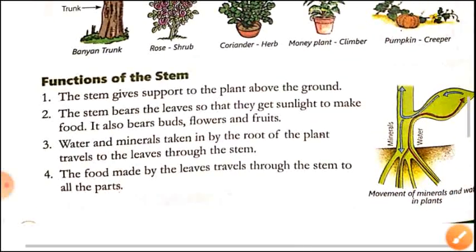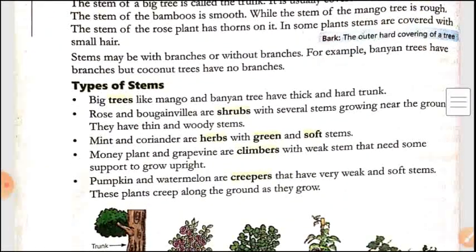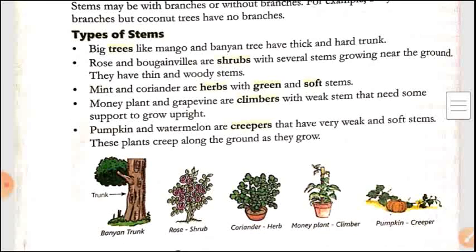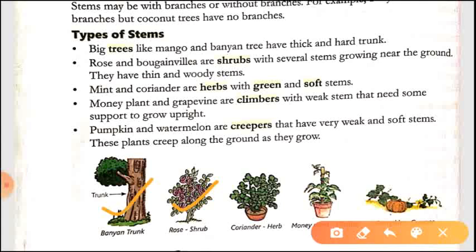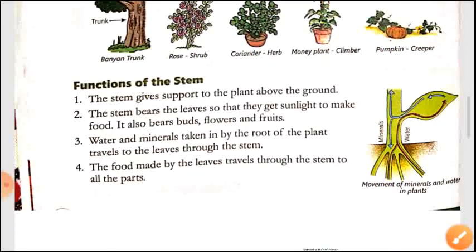Next are the functions of the stem. We have learnt that there are different types of stems — they can be woody and thin, or hard and strong, or green and soft, or very weak and needing support to grow, or very soft and unable to grow upright.